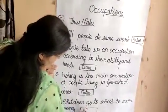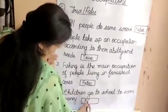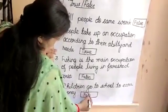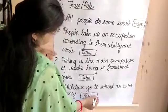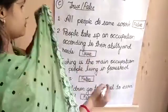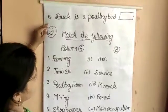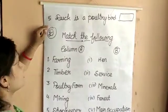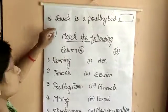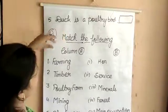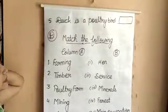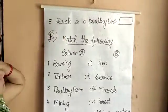Children go to school to earn money. This is false. Children go to school to learn, not to earn money. The answer is FALSE.